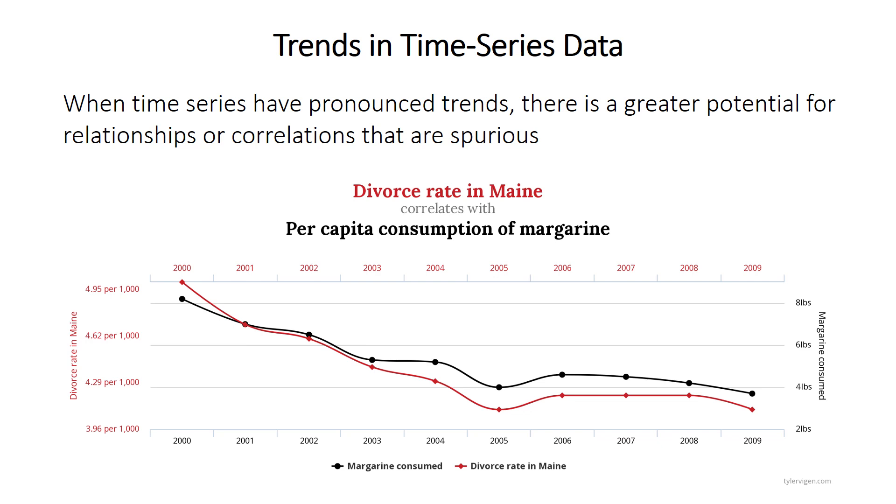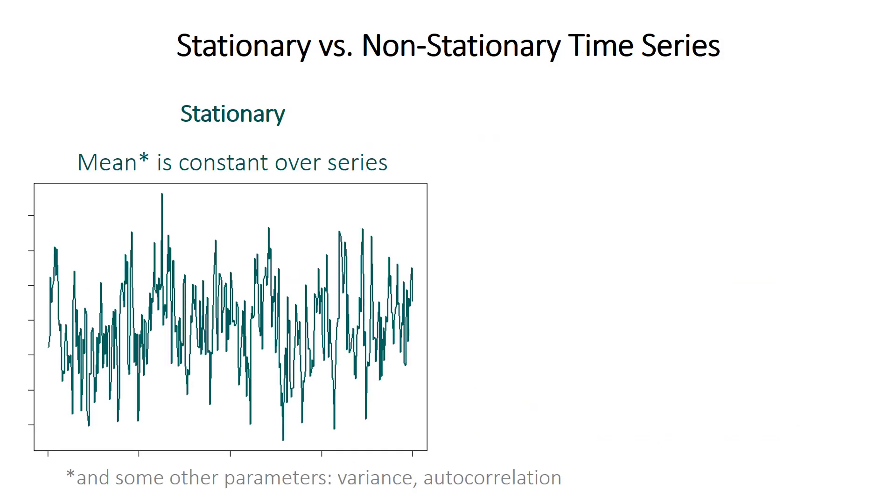So we need to deal with this in some way when working with directional time series. But time series don't have to have long-term trends, and that brings up the idea of stationary versus non-stationary.